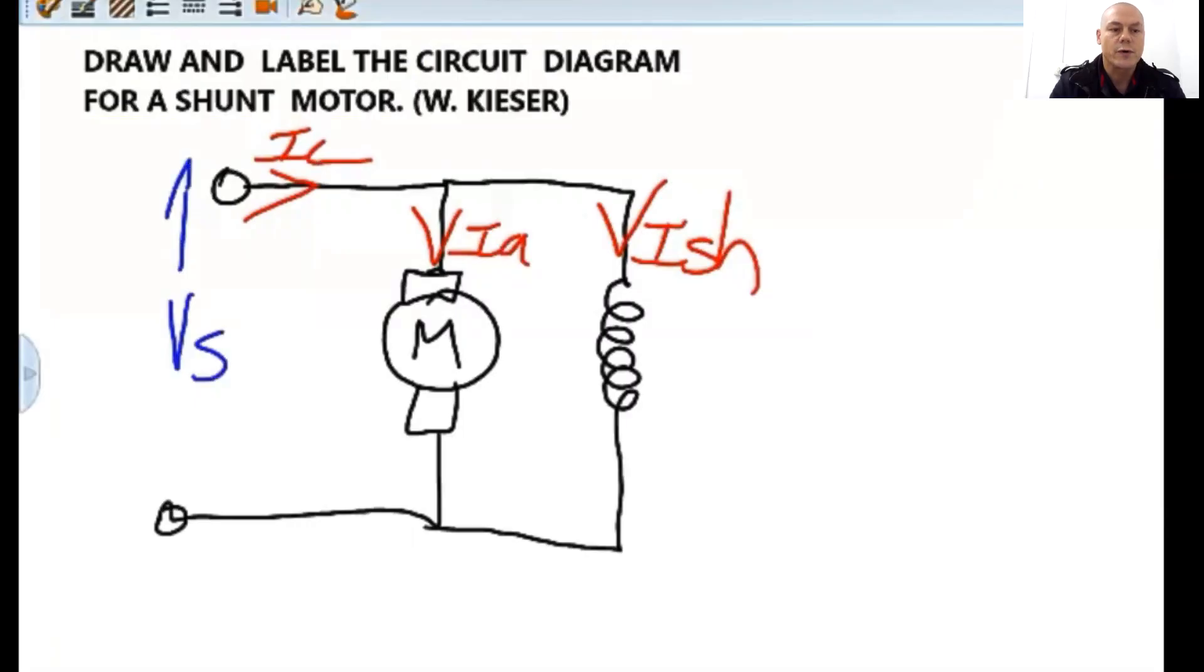The terminal voltage is across the terminals. The EMF is generated by the armature and for a motor EMF opposes the direction of current flow. The armature resistance is known as RA and the shunt resistance is known as R shunt.